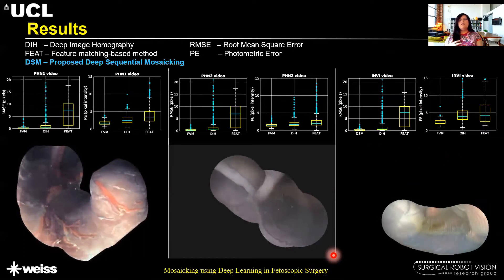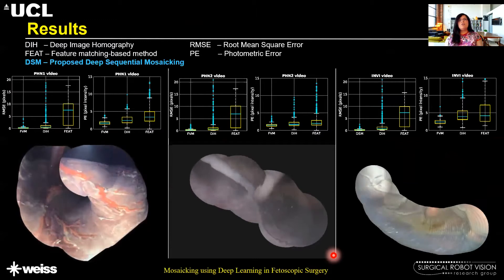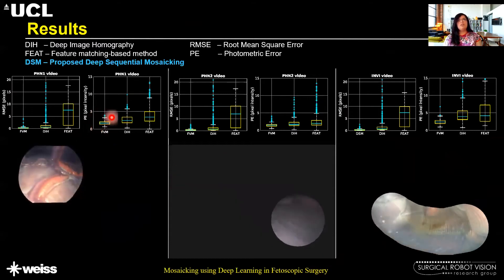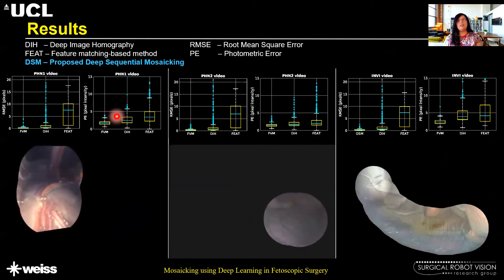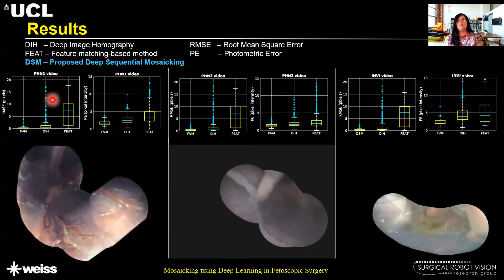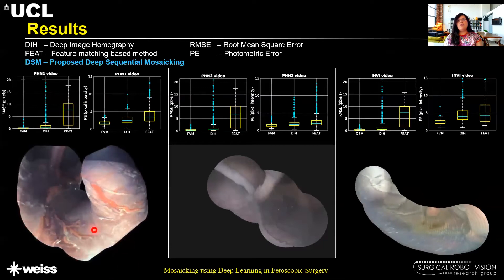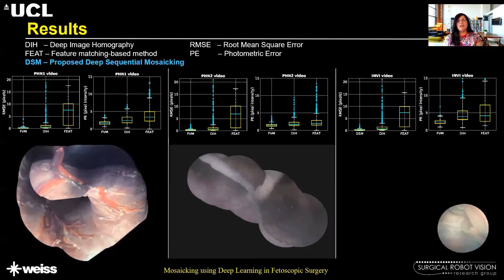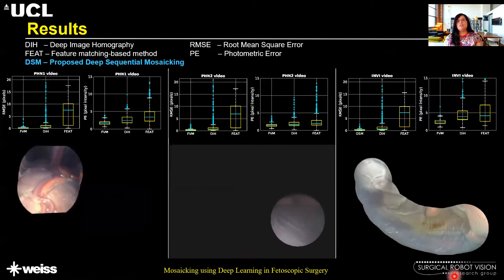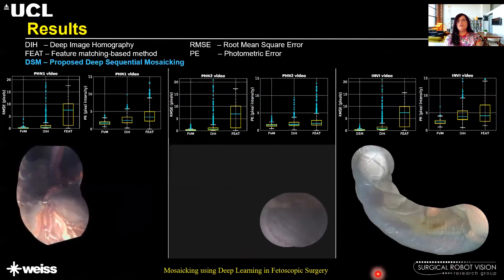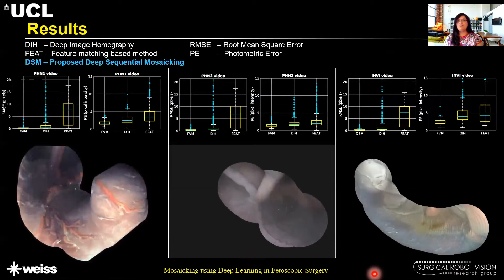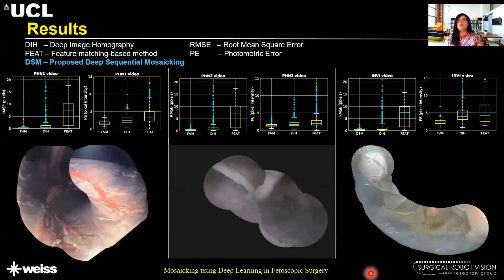Results are shown both qualitatively and quantitatively. For quantitative analysis, we report root mean square and photometric error for three methods, including a feature-based matching approach and the deep image homography approach. Results are presented from phantom data including a TTTS phantom in our lab, and from in vivo data. These mosaics show quite minimal drift, but we continued to explore how to further improve the results.